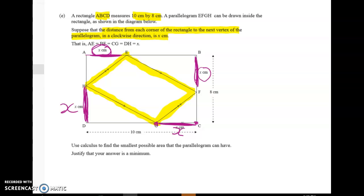What we have to do, sorry we've got piano now instead of violin but never mind. We've got to use calculus to find the smallest possible area that the parallelogram can have and then we have to justify that the answer is a minimum.